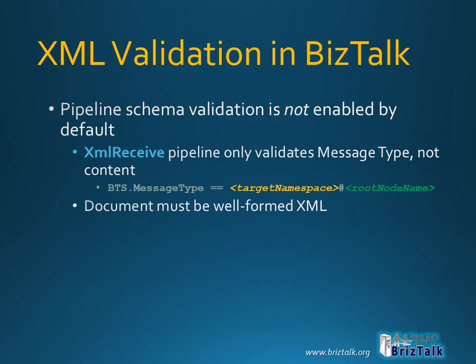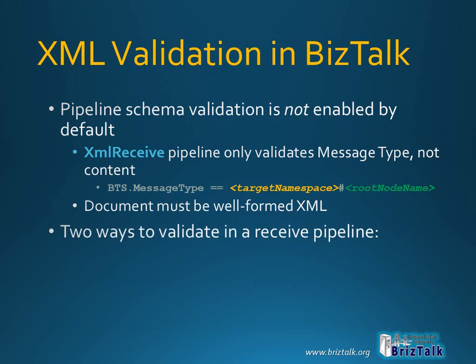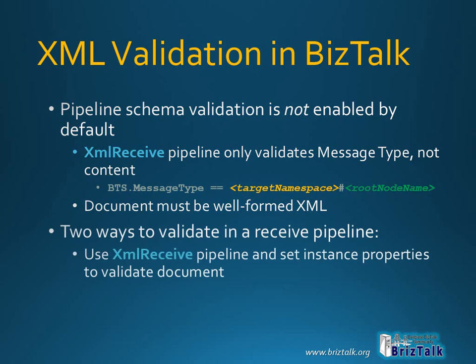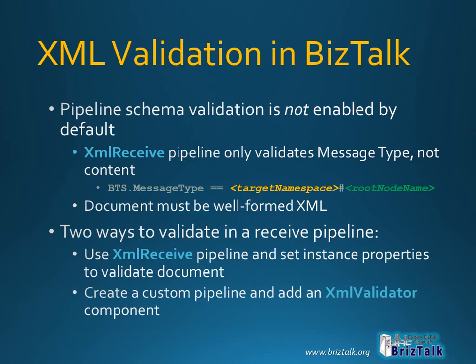Now that we know we need to explicitly enable schema validation, here are two ways to accomplish this within a receive pipeline. The first is to use the out-of-the-box XML receive pipeline and simply set a couple of instance properties within the pipeline configuration on the receive location. Because this method does not require any custom code, it can be applied after an application has already been deployed. The second method involves creating and deploying a custom pipeline that includes an XML validator component within the validation stage. This component is part of the BizTalk toolbox and doesn't require any actual coding. However, you do need to add a custom pipeline to host the component, as none of the out-of-the-box pipelines include it.